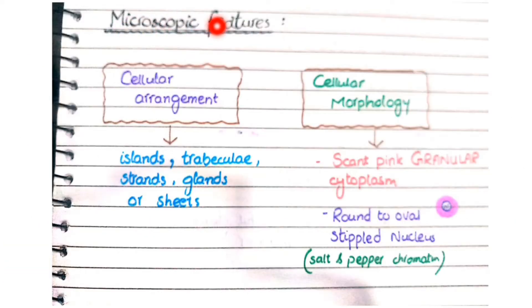As far as microscopic features of neuroendocrine tumors are concerned, you have to remember two points: how do the cells arrange and how do the cells look. The cellular arrangement shows that these tumors exhibit a variety of patterns.